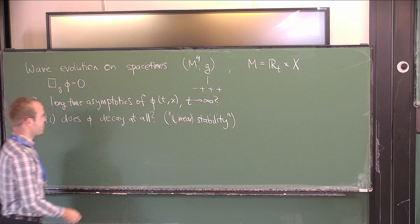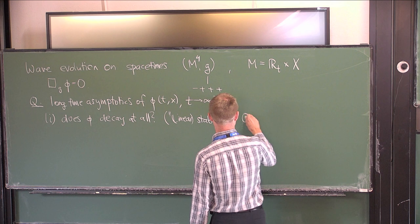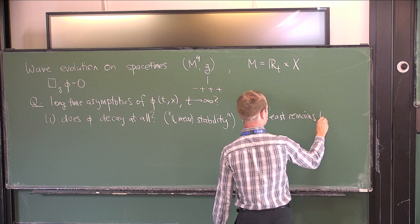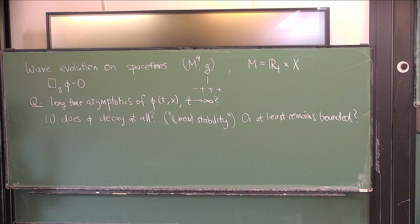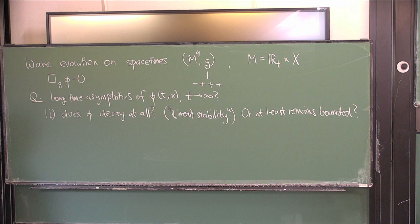If it does decay, that's sometimes called linear stability. In this talk I will only look at linear equations anyway, so I can just call it linear. A weaker version of decaying would be whether φ remains bounded, or at least remains bounded. This might already seem like a funny question — why should solutions of wave equations grow in time out of bounds?